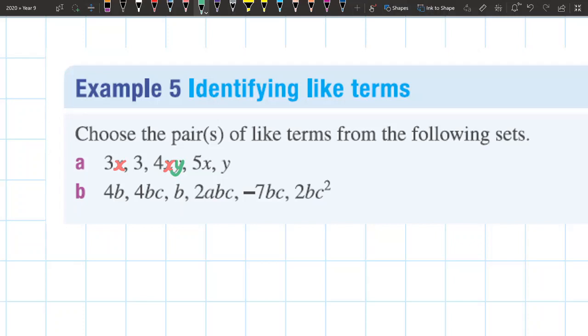This third term here actually has two pronumeral factors, x and y. So this is not a like term to my 3x.